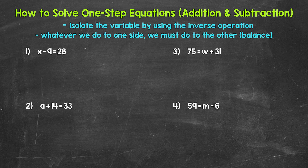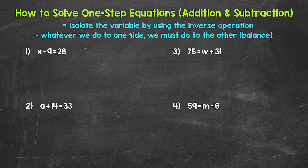When we solve one-step equations, we want to look to isolate the variable, which just means to get the variable by itself. We do that by using inverse operations — we can think of an inverse operation as the opposite operation. Basically, we use an inverse operation to undo another operation, and this will isolate the variable when we solve equations. And always remember, whatever we do to one side of the equation, we must do to the other side — this keeps everything balanced and equivalent.